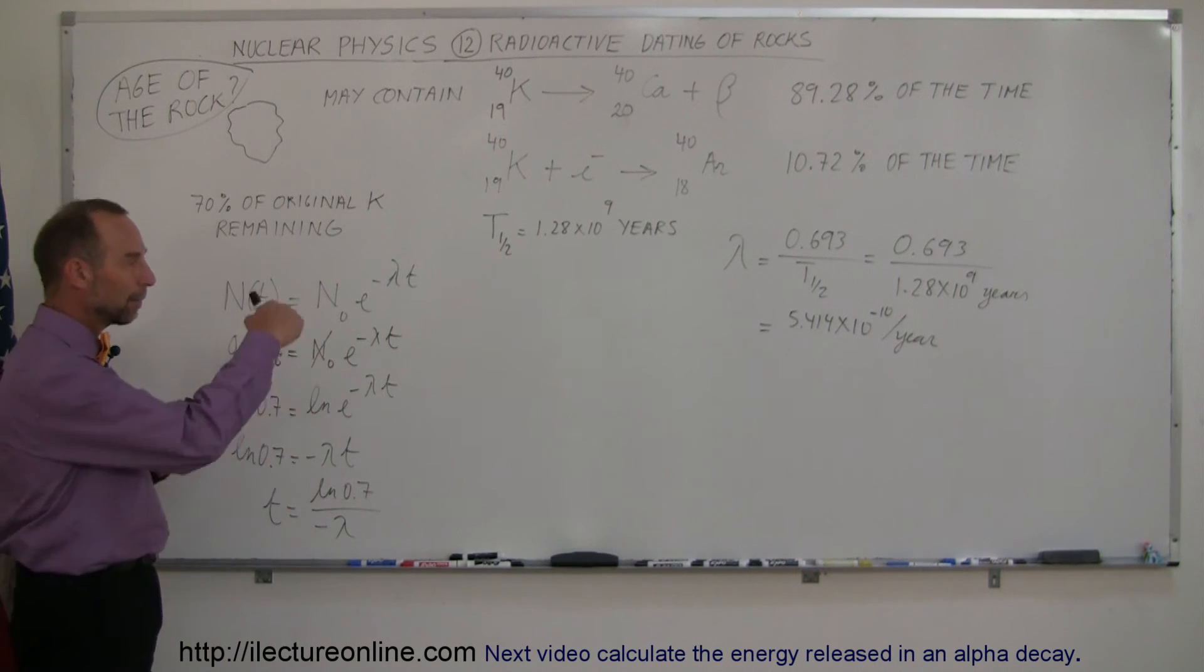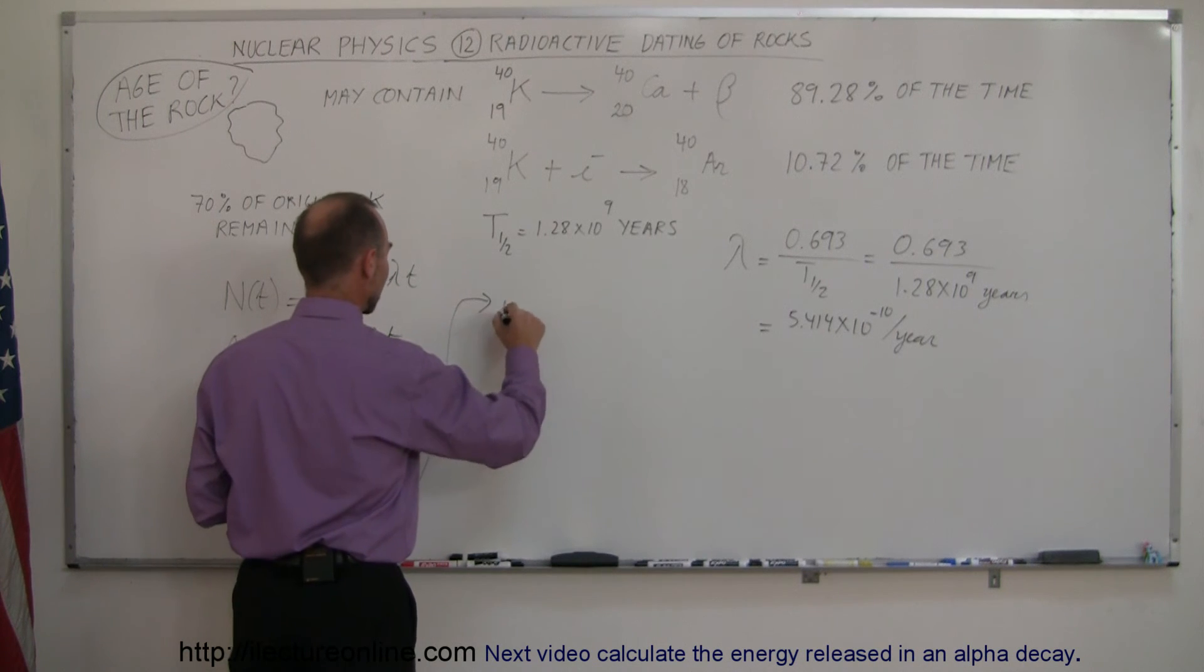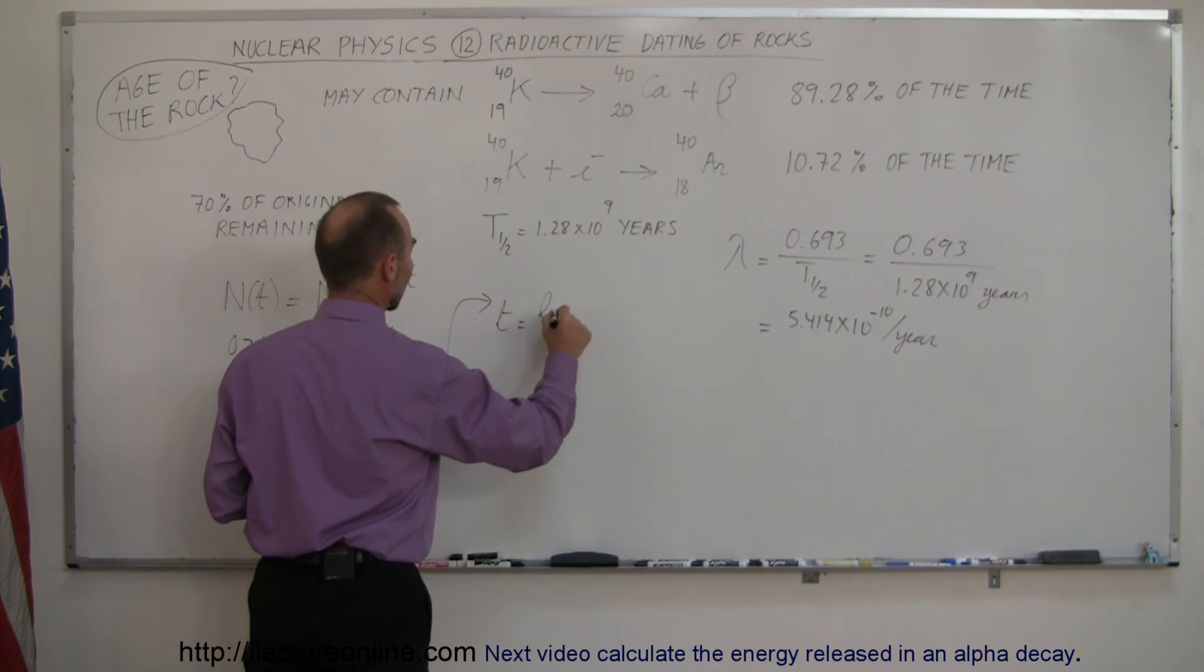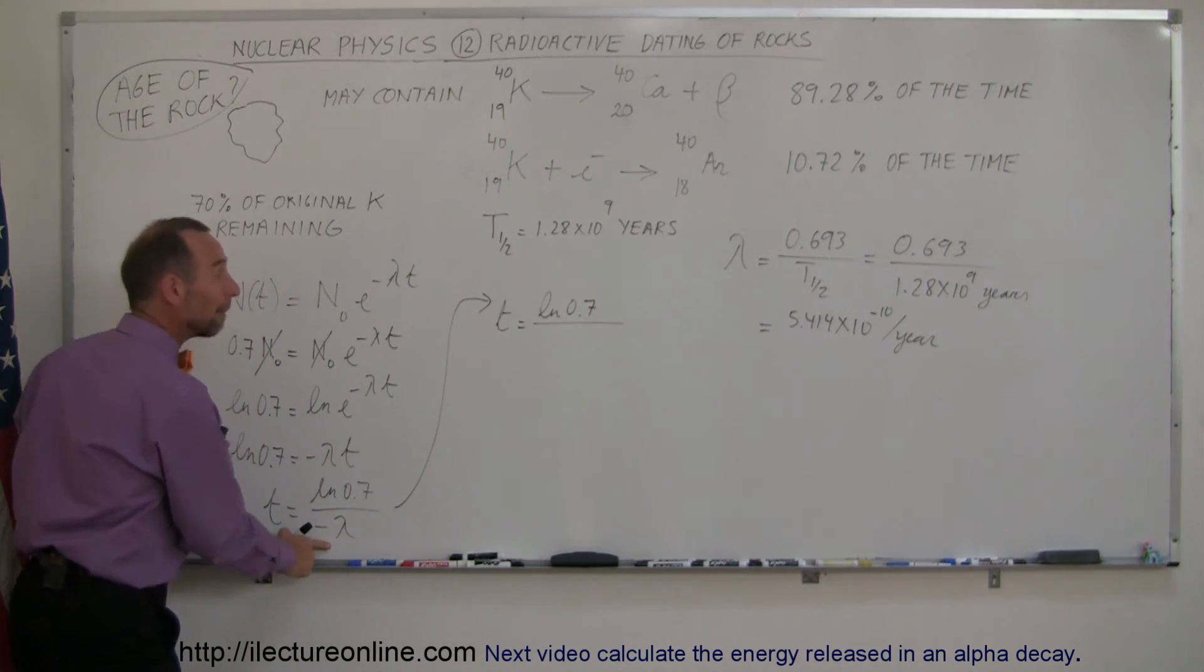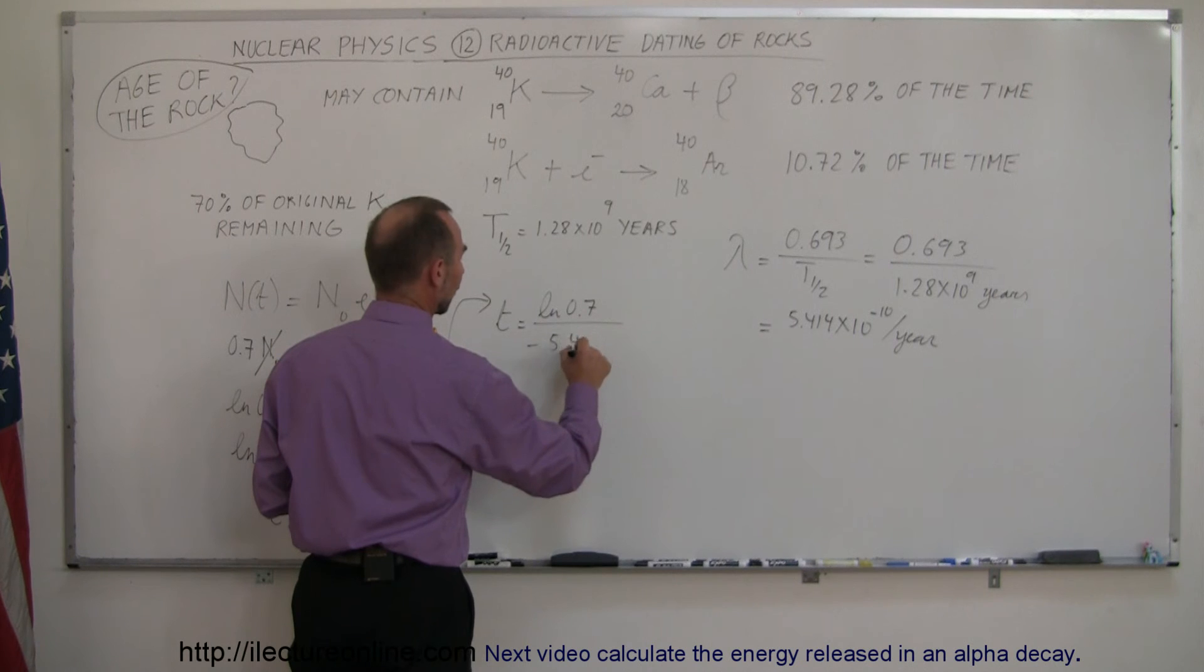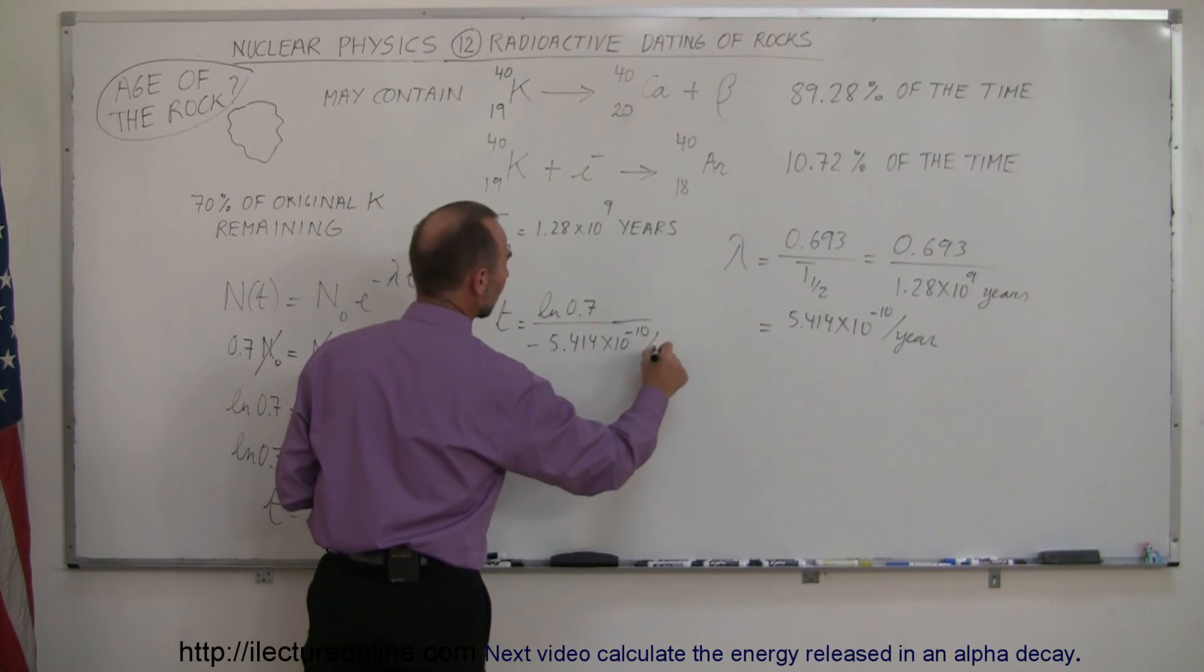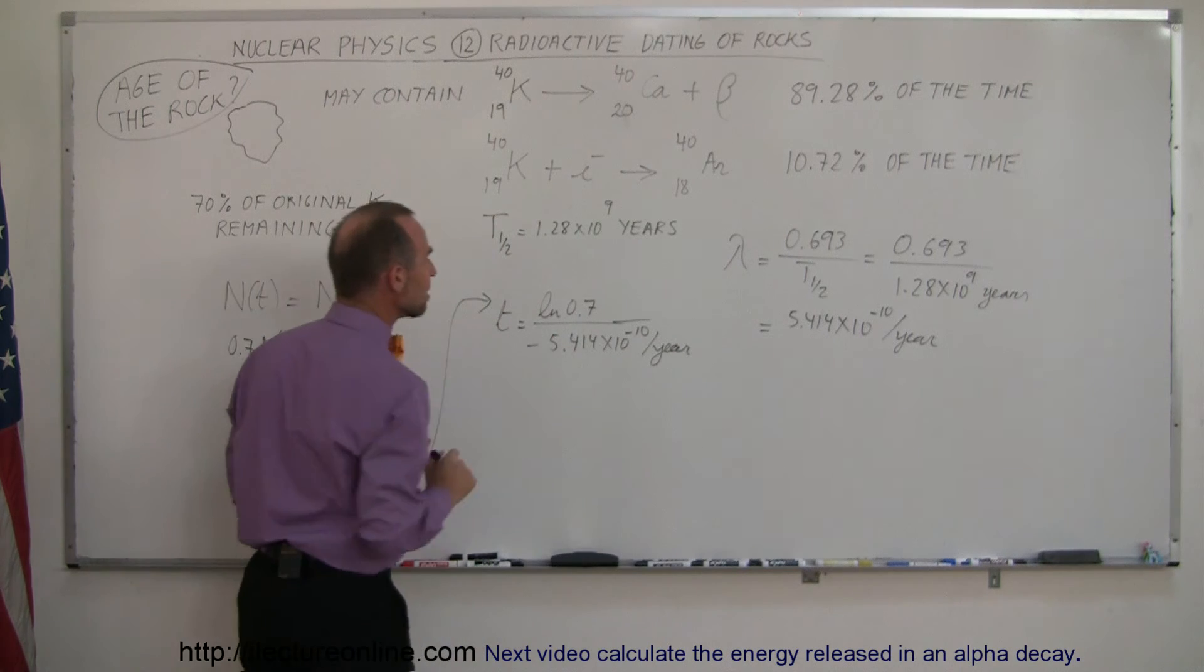And now we'll go ahead and plug in the lambda. So we have the time is equal to the natural log of 0.7 divided by minus the decay constant, so minus 5.414 times 10 to the minus 10 per year, and that will give us t in years.